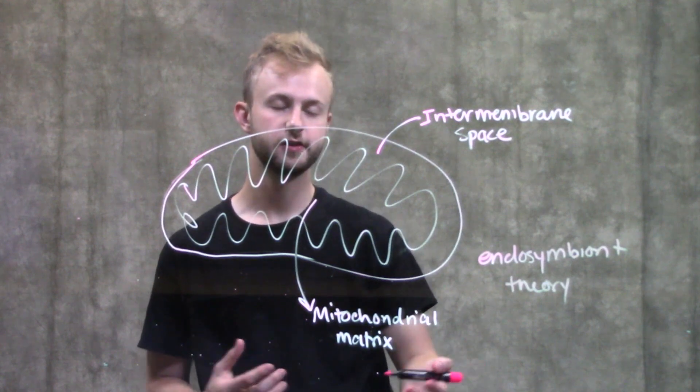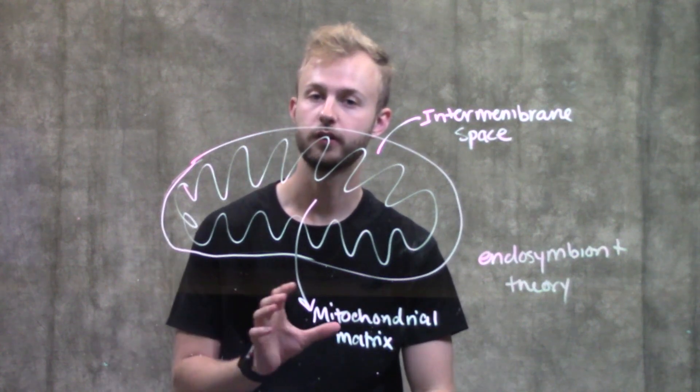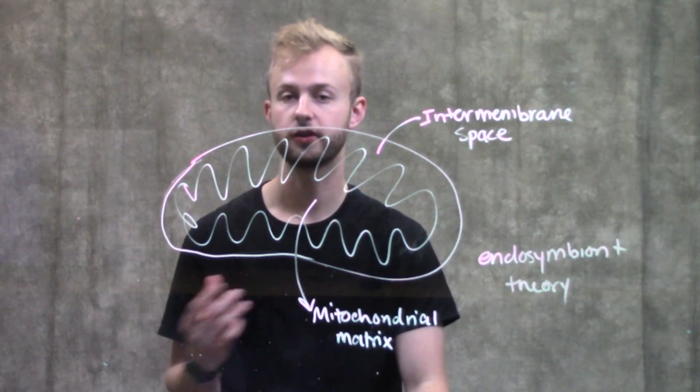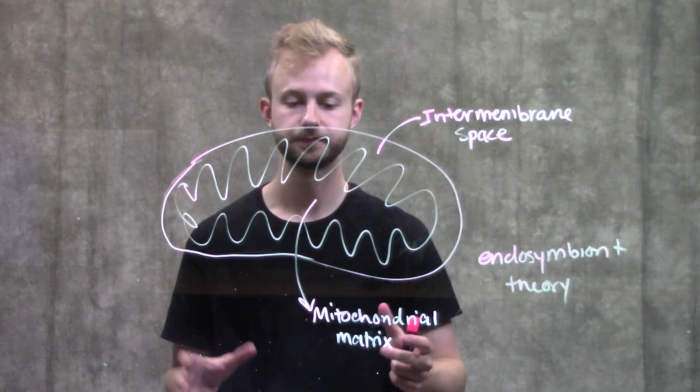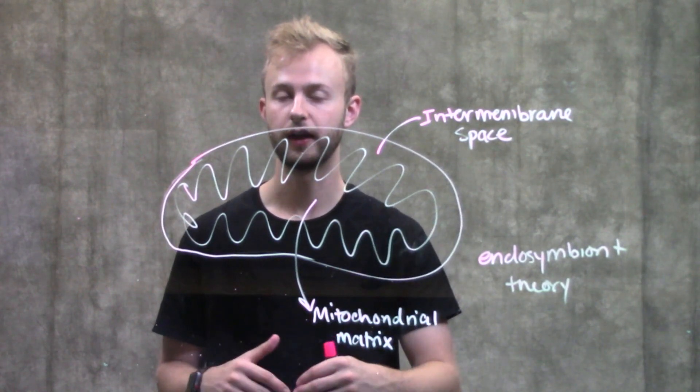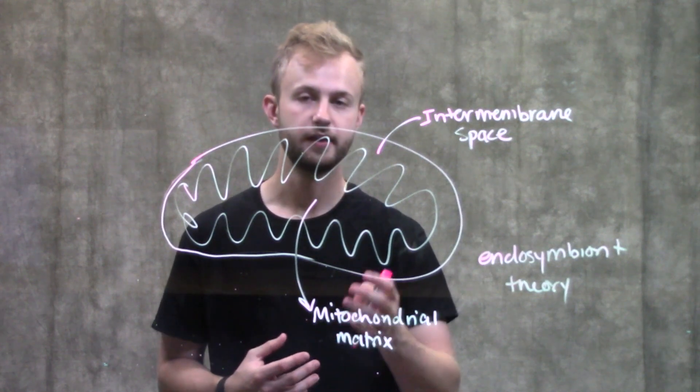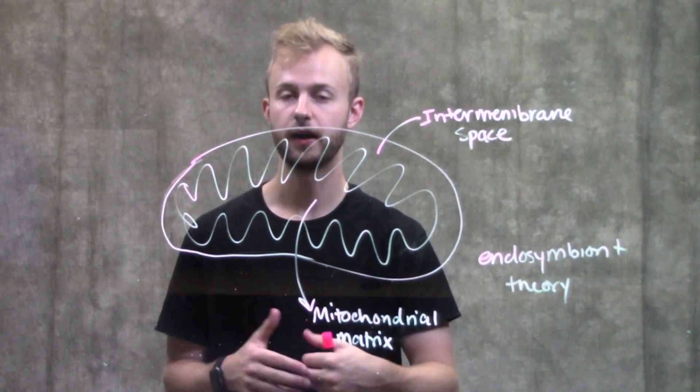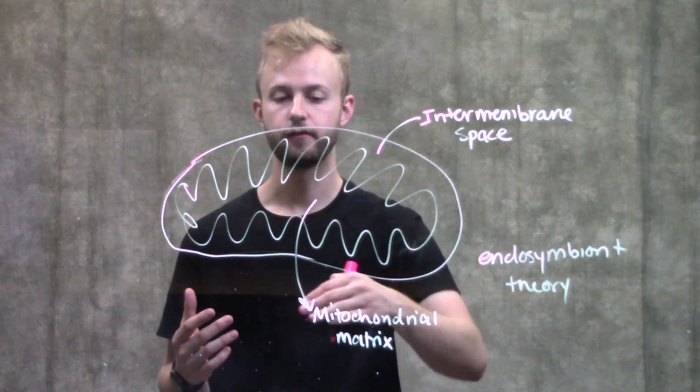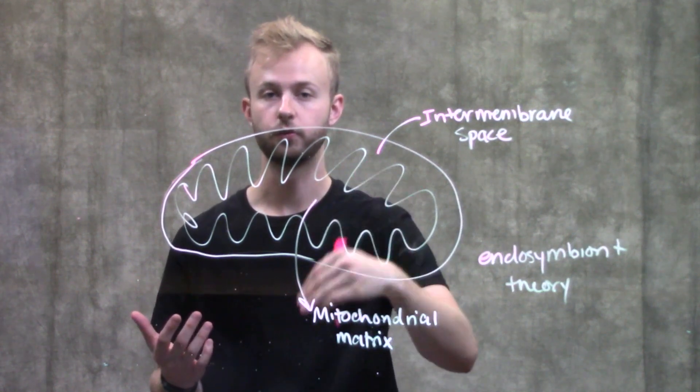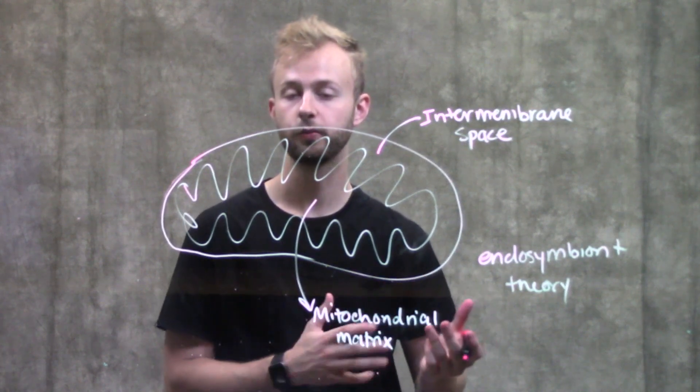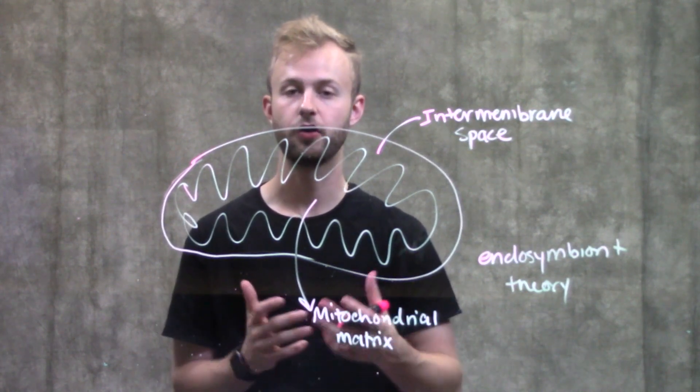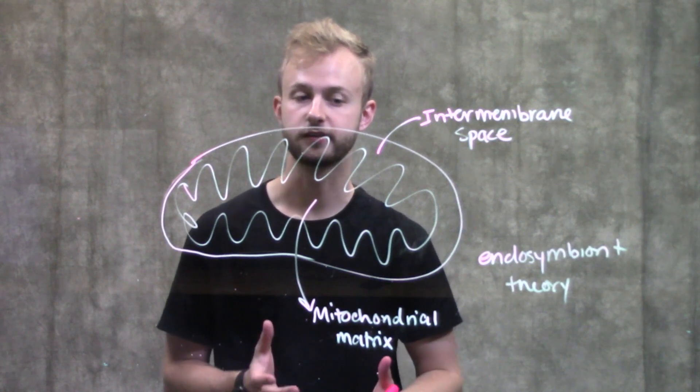Basically, what that theory says is that the mitochondria, as well as the chloroplasts which we'll talk about in another video, were at one point free-living organisms. They lived on their own outside of our cells, and then these organisms were engulfed by a larger cell and they formed a really good working relationship. So the mitochondria and the chloroplast kind of just stuck around and became part of the eukaryotic cell.